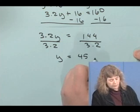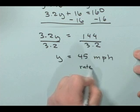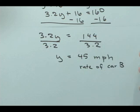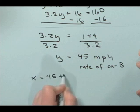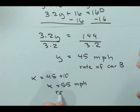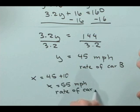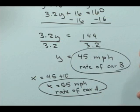We're not done. This is the rate of car B, the slower car. We find the rate of car A by adding 10. So our answer is that car A is traveling 55 miles per hour, and car B is traveling an average of 45 miles per hour. You can check this by making sure that, most easily by using 1.6 times the rate of A plus 1.6 times the rate of B, that it adds up to 160. And that concludes this example.